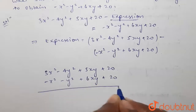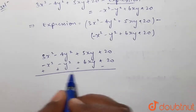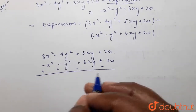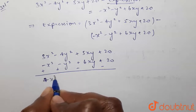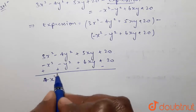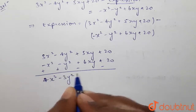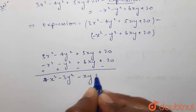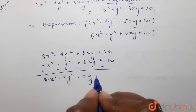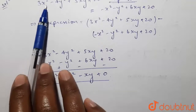We subtract the expression with the signs: plus plus minus minus. So 3x² plus x² gives 4x²; then minus 4y² plus y² gives minus 3y²; then plus 5xy minus 6xy gives minus xy; then plus 20 minus 20 gives 0.